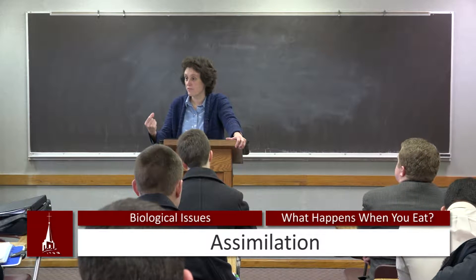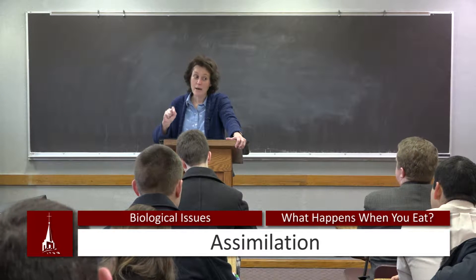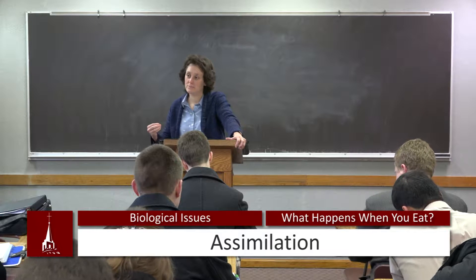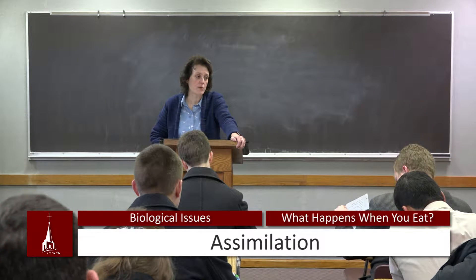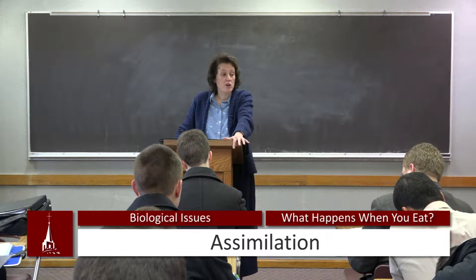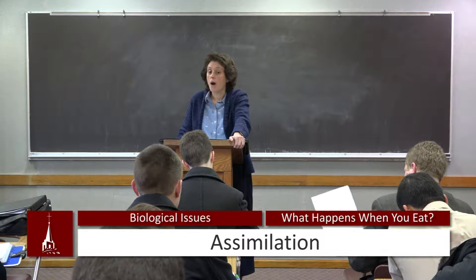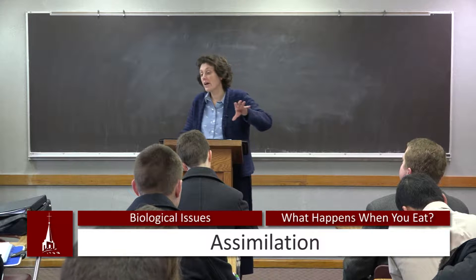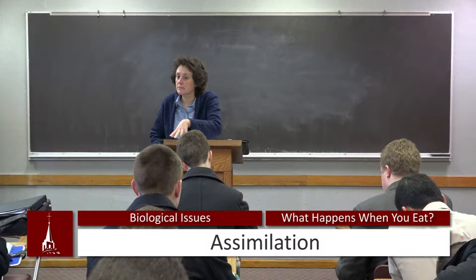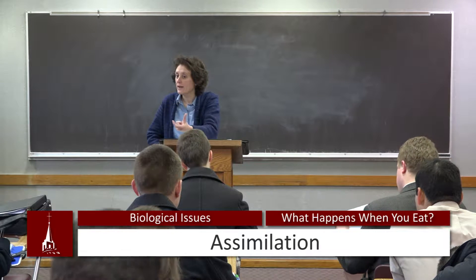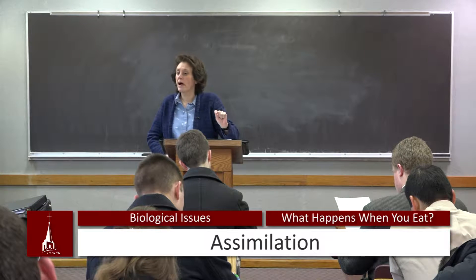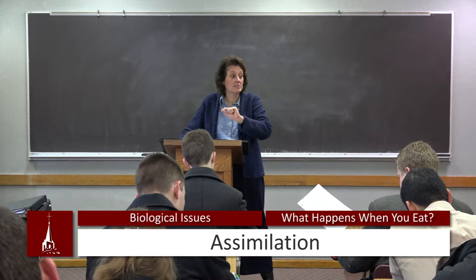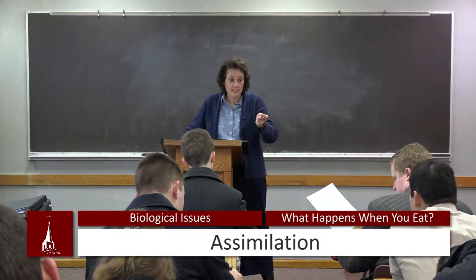The duodenum, the first foot or so of your small intestine, chemically digests most of your food substances. Then the jejunum and the ileum will be absorbing those building blocks. What about carbohydrates? Carbohydrates are sugars and starches. The complex carbohydrates are polymers — long chains of repeating smaller units. The building block of carbohydrates is monosaccharides. The most important monosaccharide is glucose — the energy source of all cells. I'm reviewing and trying to put this all together so you understand it better.